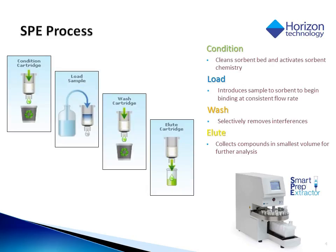The SPE process consists of four steps. Number one, condition, where we clean the sorbent bed and activate sorbent chemistry. Number two, we load the sample, introducing the sample to the sorbent to begin binding at consistent flow rates. Number three is an optional wash step, where we selectively remove interferences. And number four, we elute, collecting the compounds in smallest volumes for further analysis.